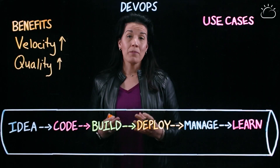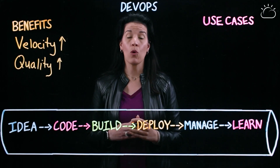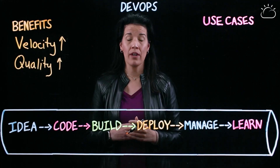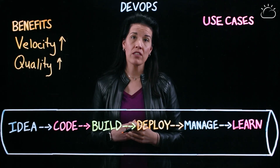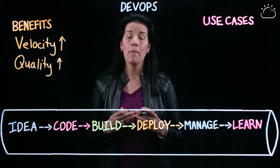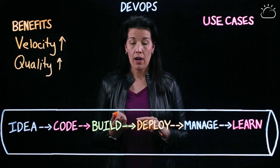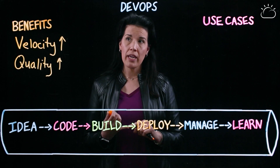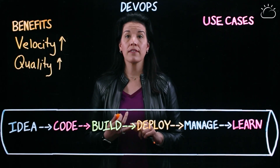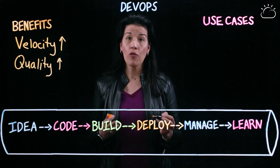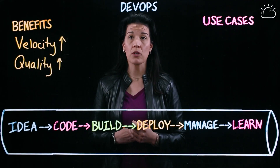The war between application development and IT operations really has one big loser, and that is the business. Because the benefits are really going to manifest themselves in terms of business agility — through being responsive to consumer demands, to changing market conditions, and basically improving overall time to market of what an enterprise can deliver to its consumers.